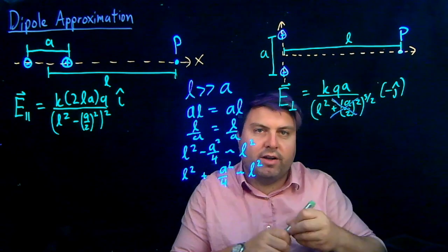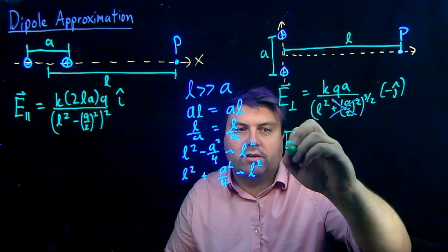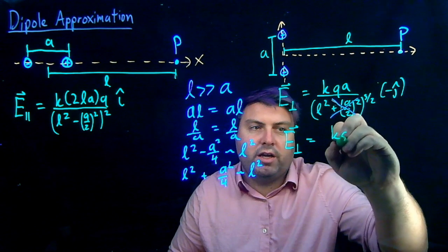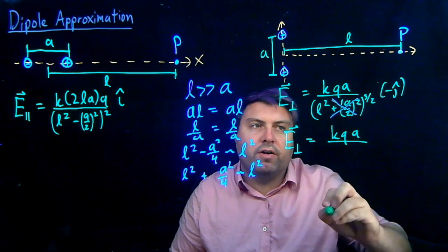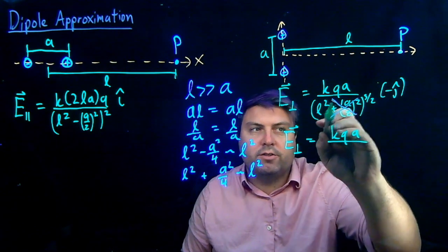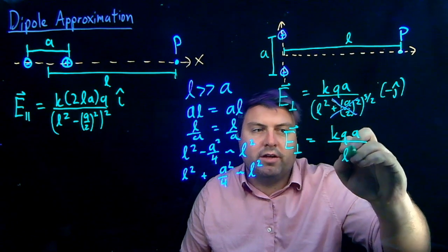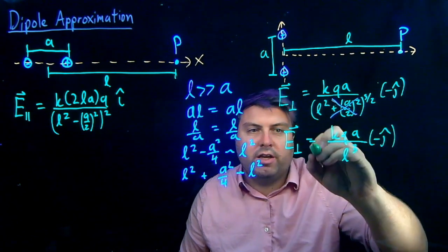So, now that I have, right, E perpendicular, is going to be KQA over, and now we look at L squared to the 3 halves is just going to be L to the 3rd power, negative J hat.